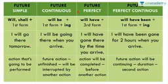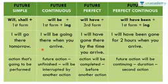The future continuous tense is used when you're talking about two actions that are going to happen in the future, where the first action will be interrupted by the second one. For example: 'I will be going there when you arrive.'